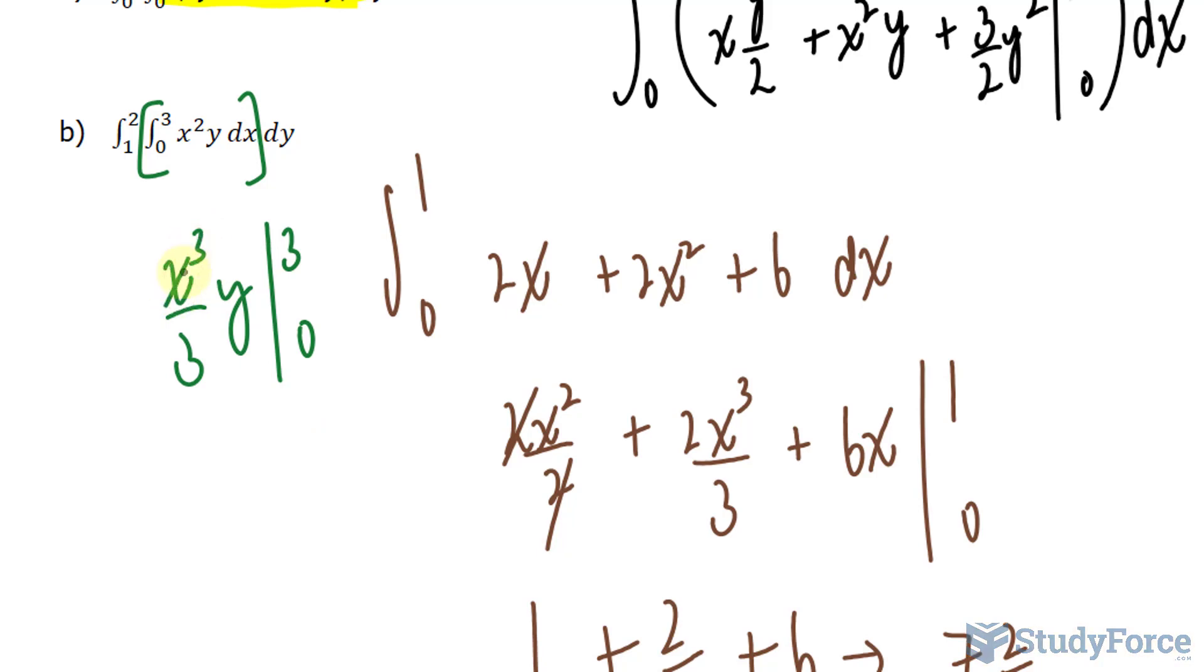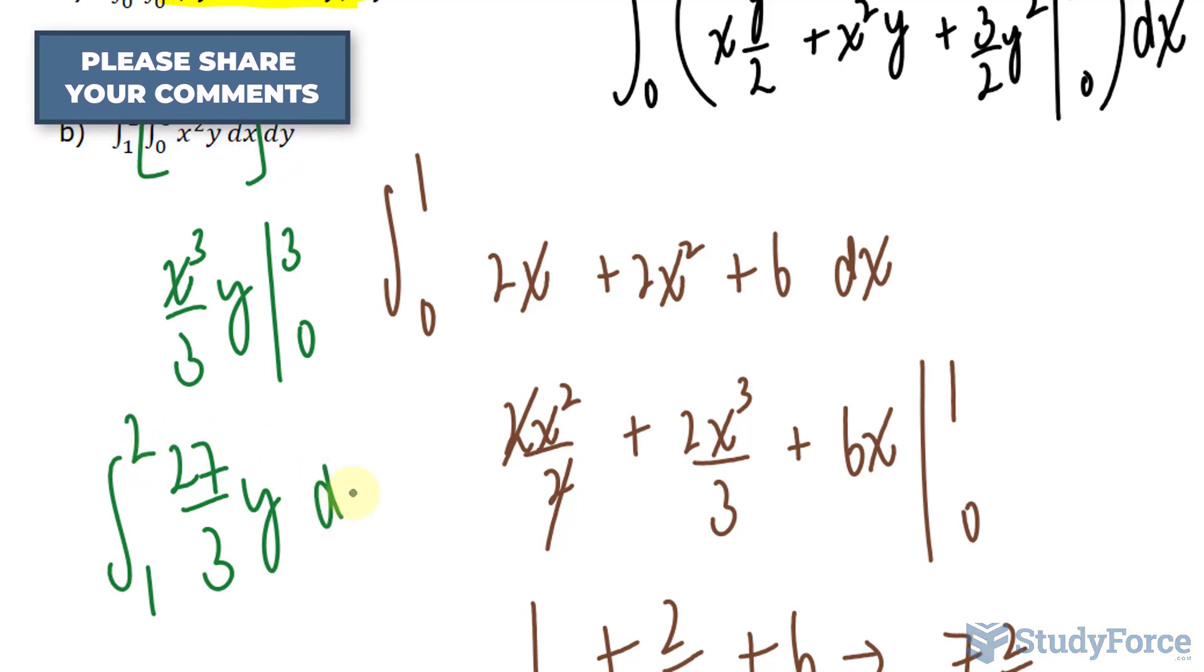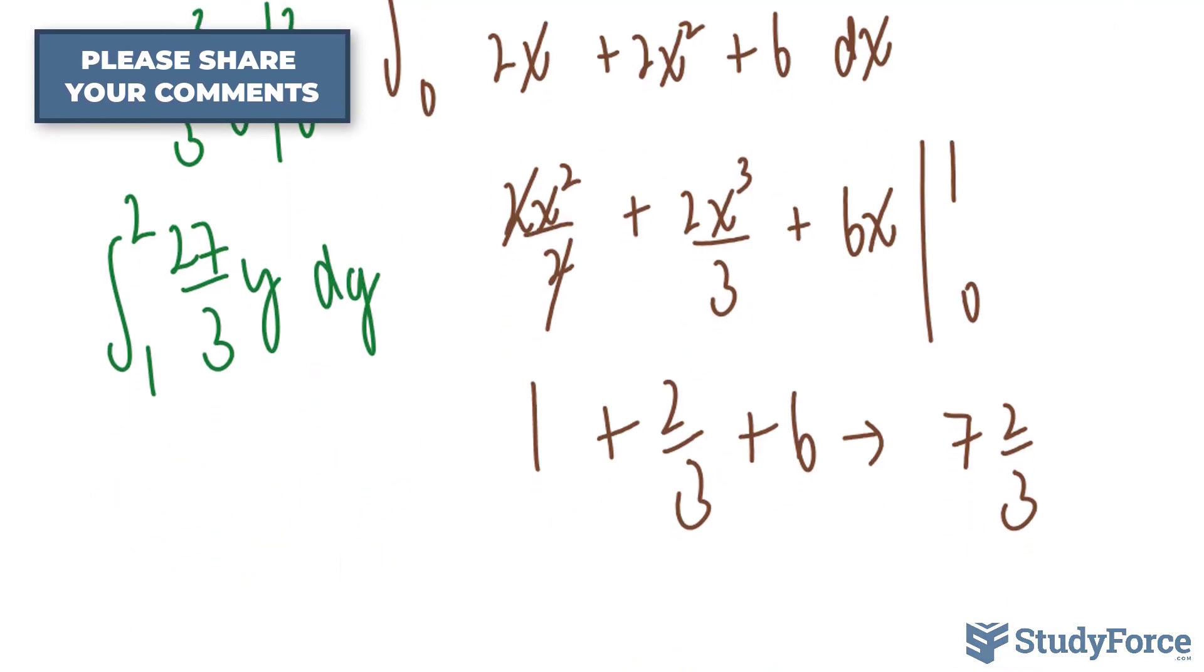But over here, we have 3 to the power of 3. That's like saying 3 times 3 is 9 times 3 is 27 divided by 3. That's equal to 9, but I'll leave it as 27 over 3. Now, the integral of this between 1 and 2, of course, with respect to y.